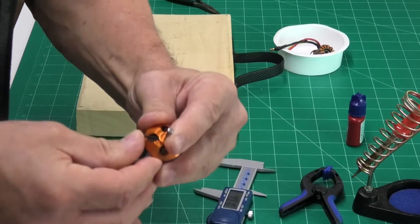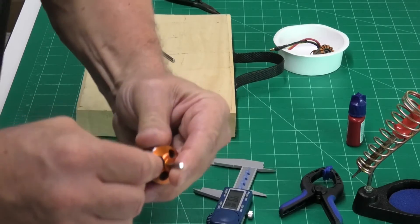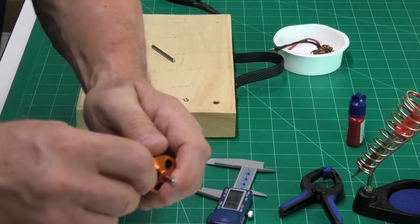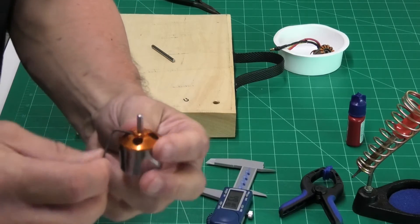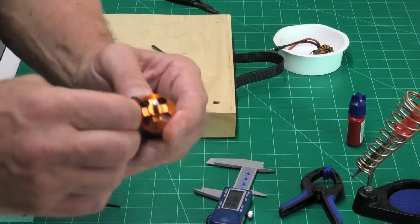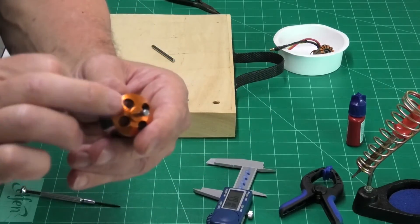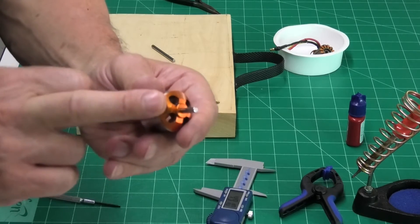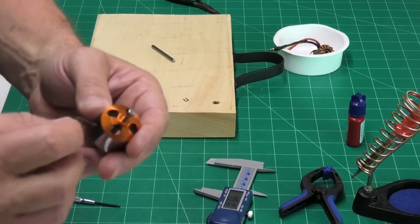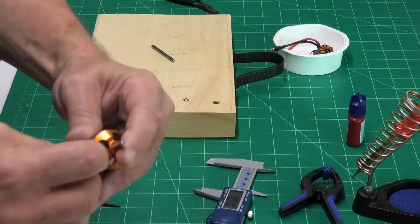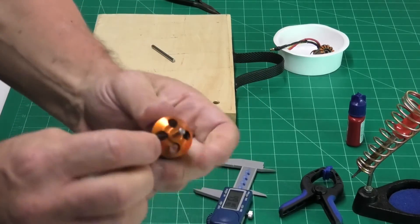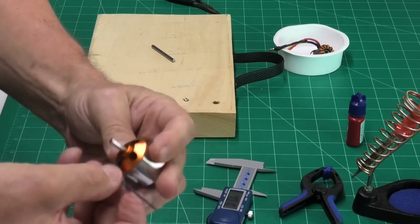So, put the allen key in, make sure it's seated really nicely and try and undo it. Now, I've tried this already and it is really, really tight. It's not going anywhere. So, what we need to do is try and reduce the hold on this. It was probably put in using some kind of thread lock. Obviously, a thread lock that's not going to give under pressure.